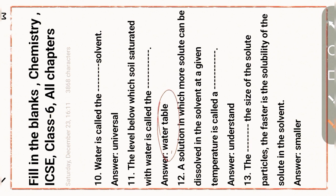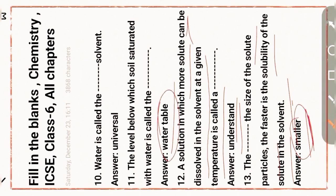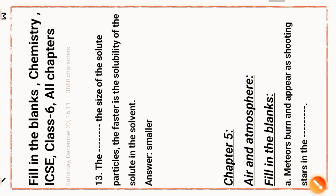The level below which soil is saturated with water is called the water table. Next question: a solution in which more solute can be dissolved in the solvent at a given temperature is called an unsaturated solution. Next question: the smaller the size of the solute particles, the faster the solubility of the solute in the solvent.